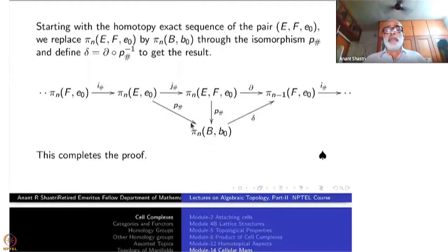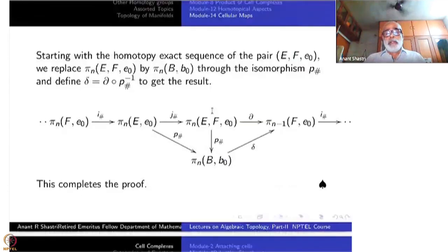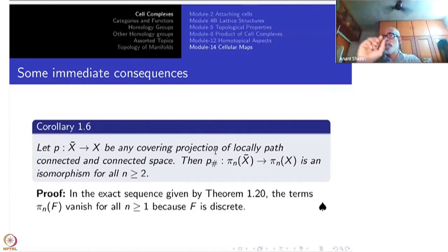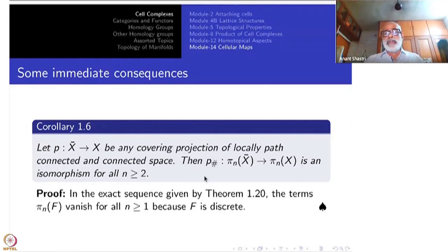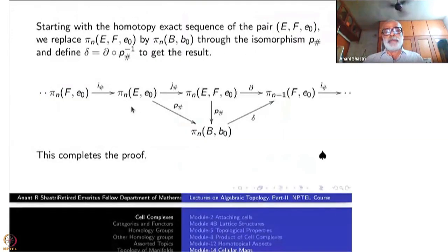This theorem has several applications. One important case: a covering projection is always a fibration — a very peculiar and important fibration with more properties than an ordinary fibration. In particular, the fiber F is a discrete space. When the fiber is discrete, pi_0(F) corresponds to the number of points in it, and all higher homotopy groups pi_1, pi_2, pi_3, ... of F are all zero. So whenever pi_n(F) appears in the long exact sequence it vanishes, and p-check becomes an isomorphism.